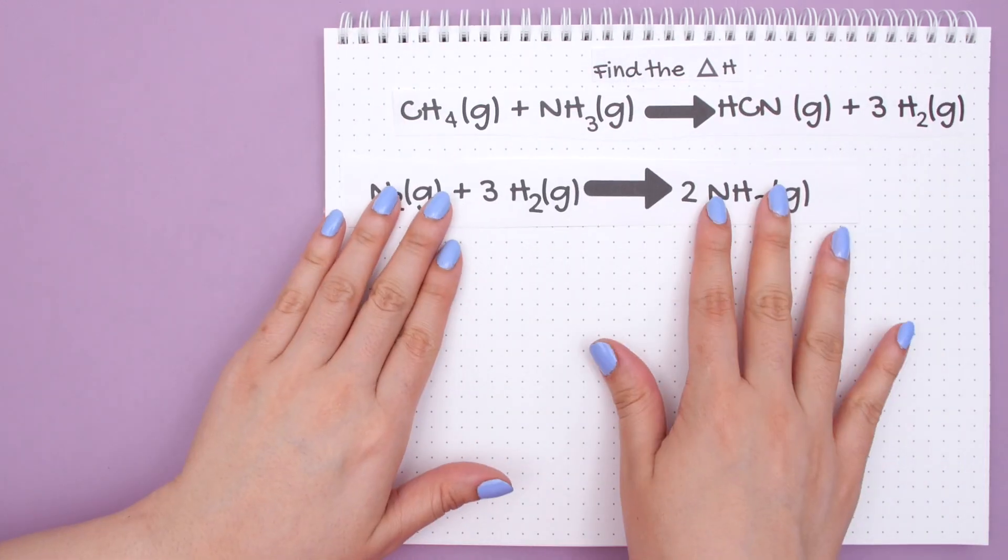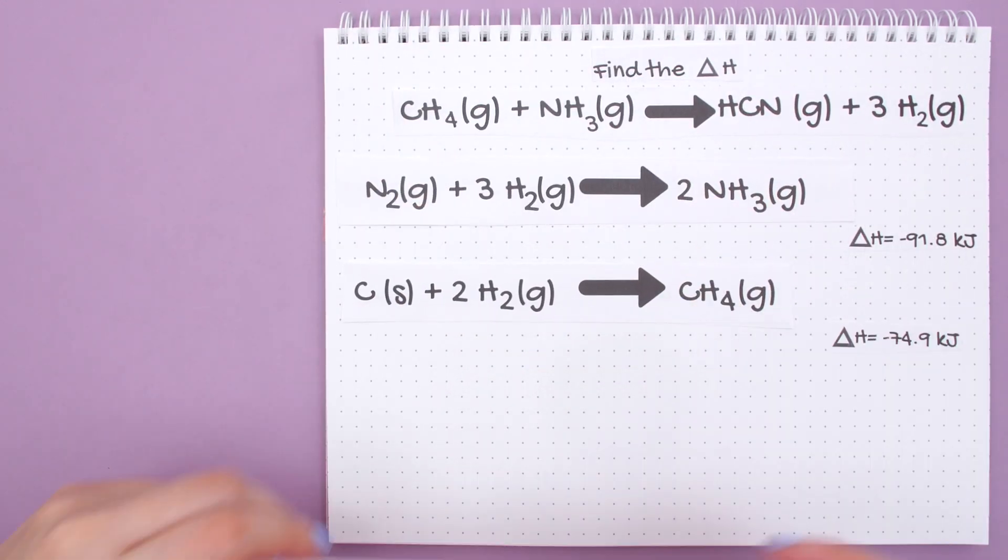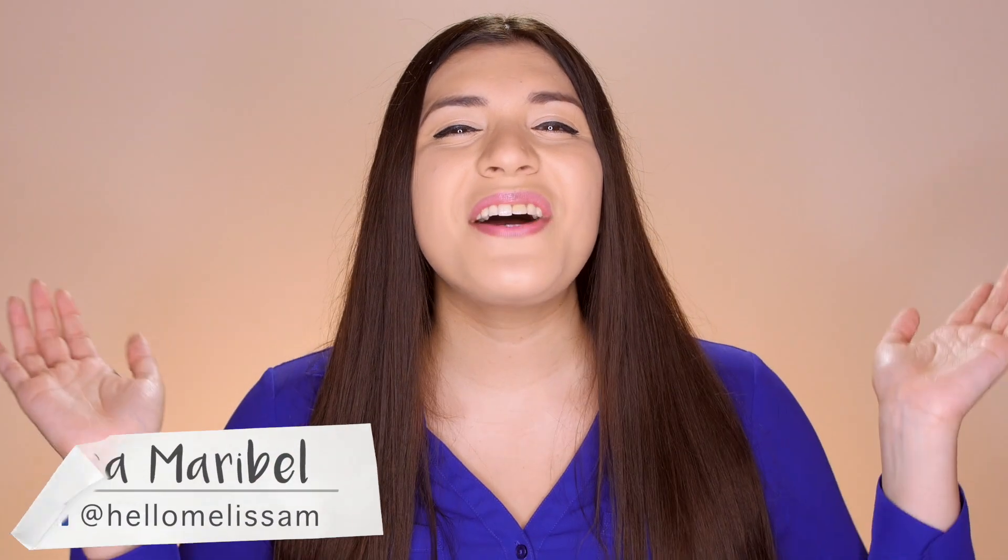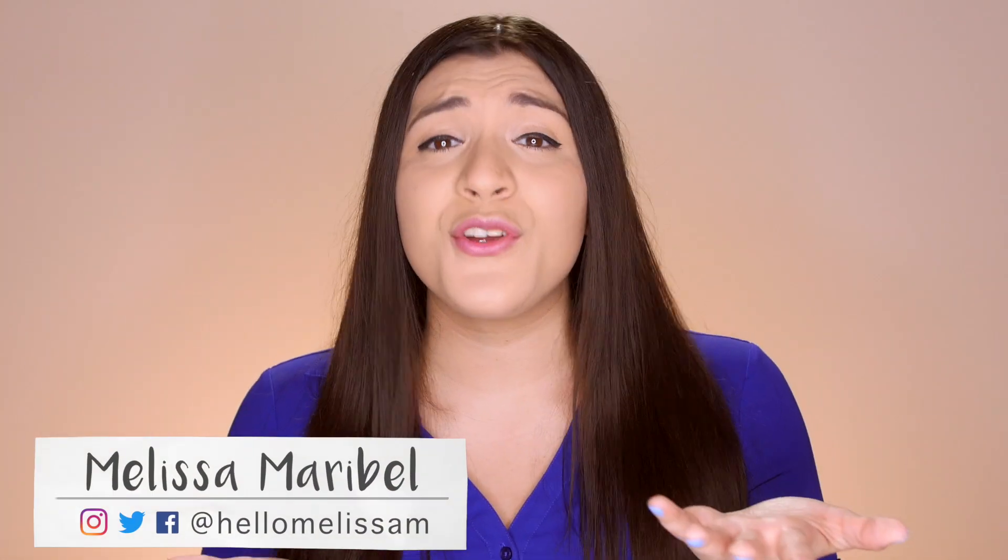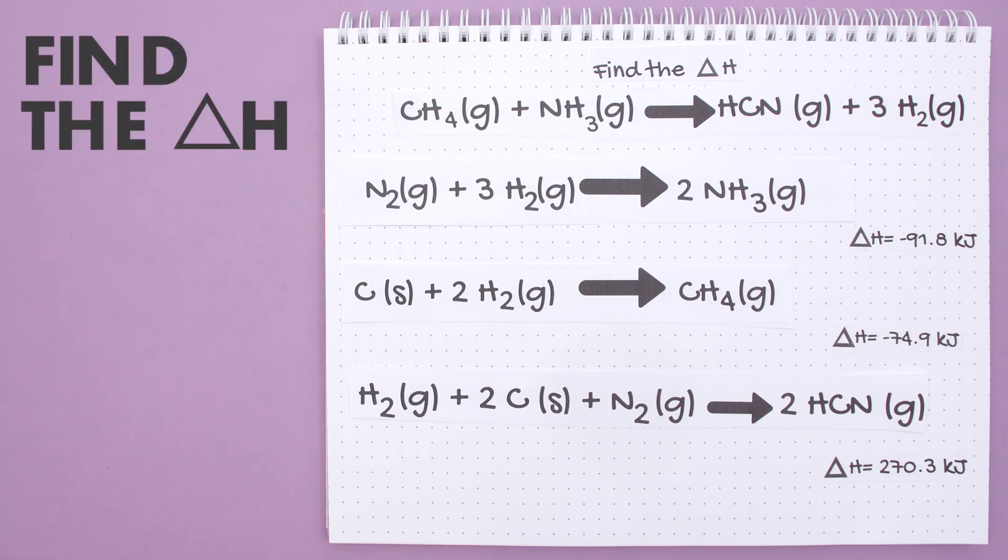This type of Hess's Law question has tricked so many students on exams but it's not going to trick you. Hello everyone, I'm Melissa Maribel, your personal tutor, and for this question we will find the enthalpy change of that top reaction by manipulating the three bottom reactions to look like that top reaction, which is our goal.